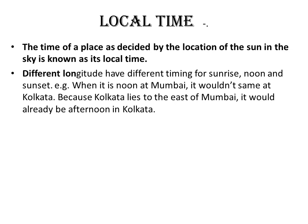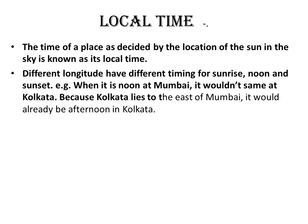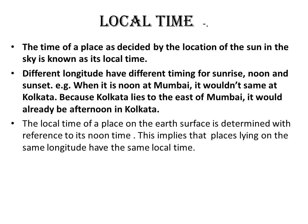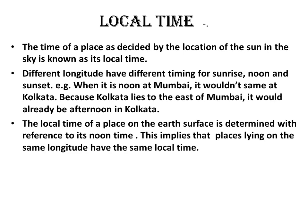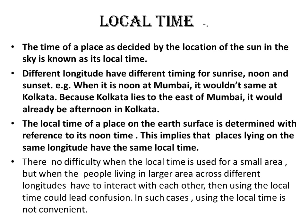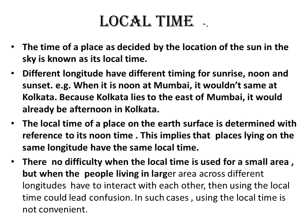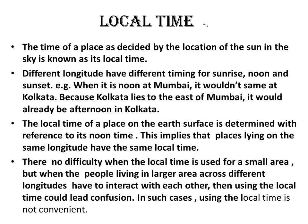For example, when it is noon at Mumbai, it wouldn't be noon at Kolkata. Because Kolkata lies to the east of Mumbai, it would already be afternoon in Kolkata. The local time of a place is determined with reference to its noon time, meaning places on the same longitude have the same local time. But when people across different longitudes interact, using local time could lead to confusion and is not convenient.